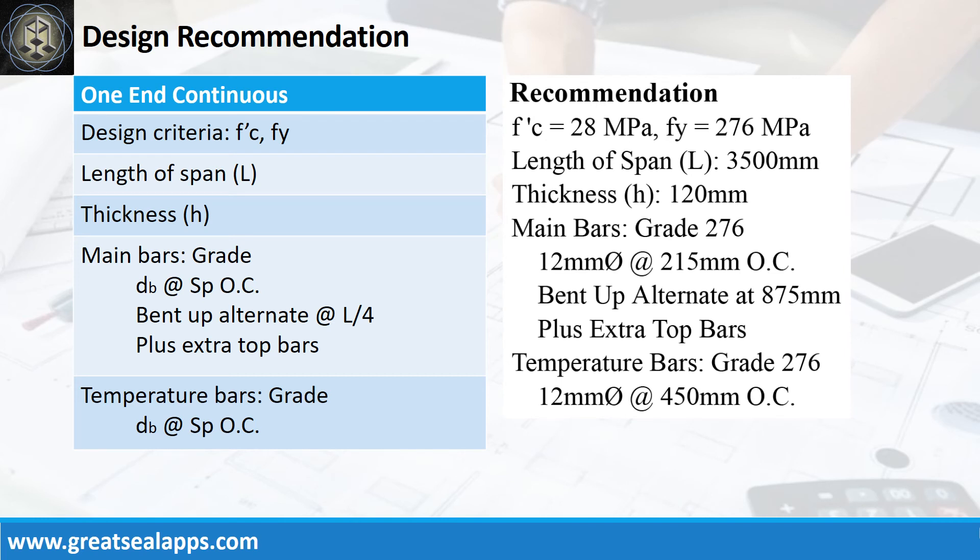Design recommendation as follows. Fc prime equals 28 MPa. Fy equals 276 MPa. Length of span is 3500 millimeters. Thickness is 120 millimeters. Main bars of grade 276, 12 millimeter bar at 215 millimeters on center. Bent up alternate at 875 millimeters. Plus extra top bars. Temperature bars of grade 276, 12 millimeter bar at 450 millimeters on center.